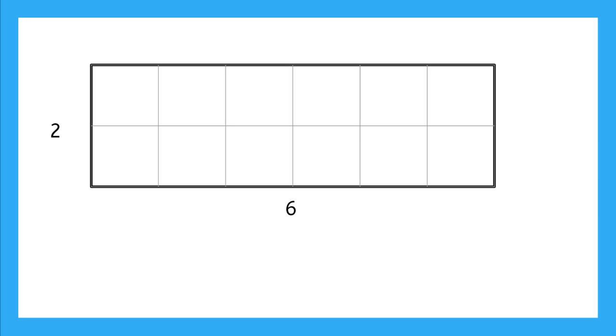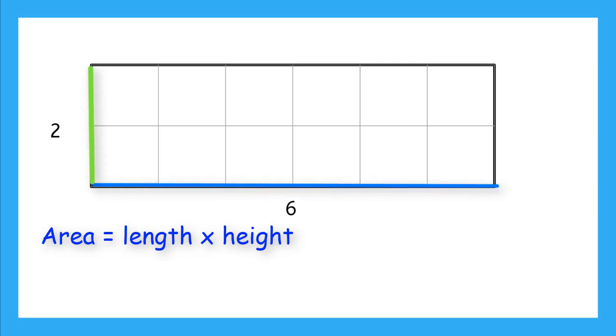Do you remember how to find the area of a rectangle? We can use a formula that says the area is equal to the length times the height. On this rectangle, the length is 6 and the height is 2. So we would multiply those together to get 12.